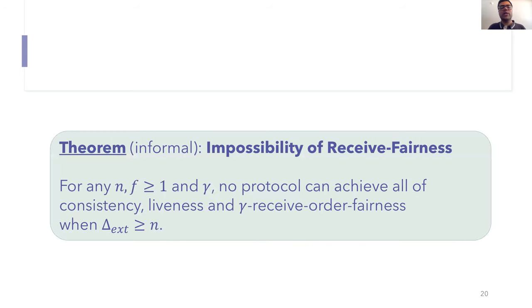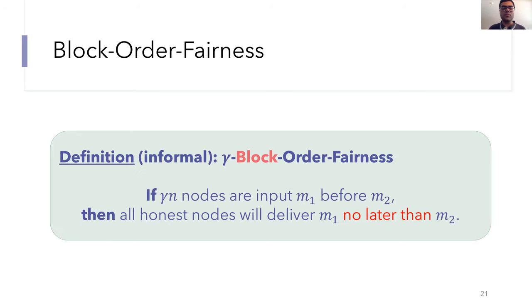We can extrapolate this impossibility result to a general n. Our informal result is that for any n, for any f greater than or equal to one, and any gamma, no protocol can achieve all of consistency, liveness, and receive order fairness if the external network synchrony bound is at least n. For gamma less than one, the impossibility result actually holds even if delta equals zero.